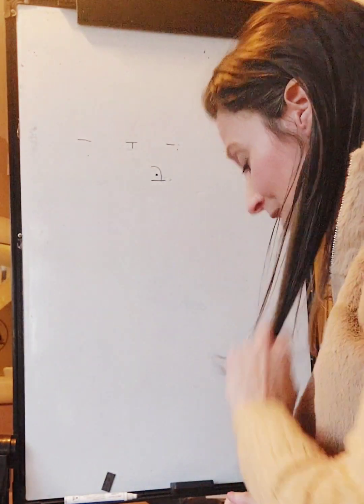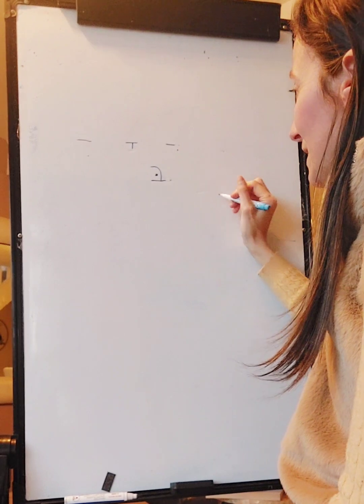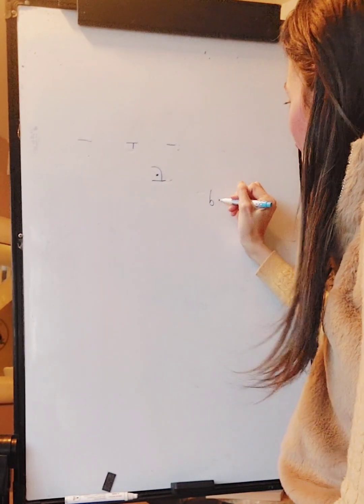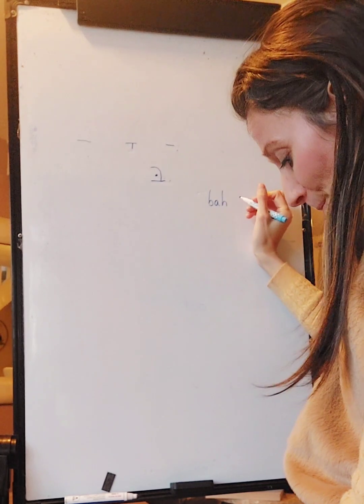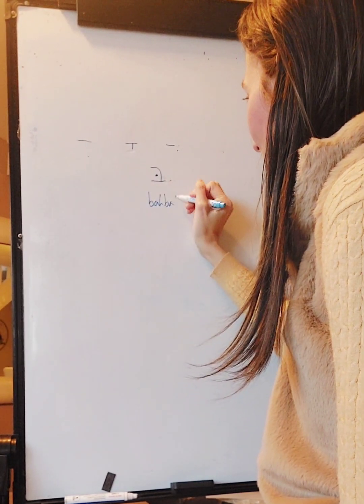Now I want you to have a go of writing the Hebrew to match the sounds. I'll tell you the sounds and I want you to write the Hebrew with the vowel underneath to match it. The first sound is ba, then baba, and bab.